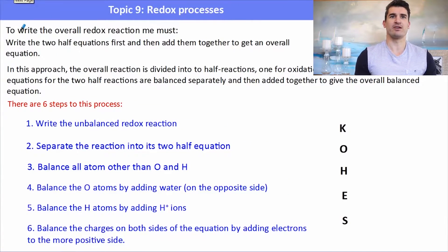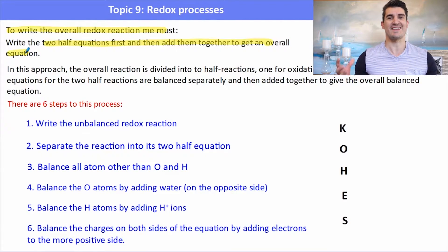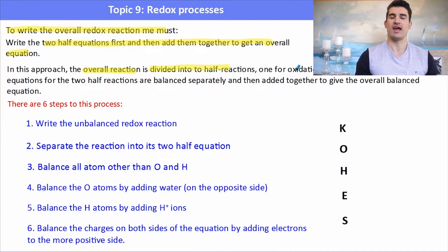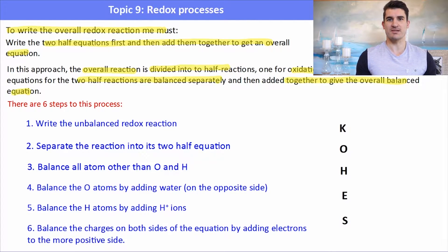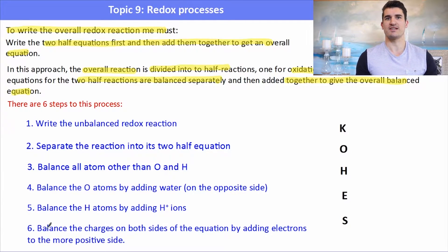So how do we write a redox reaction? To write an overall redox reaction we must first balance the individual half equations and then add them together at the end. We want to write the equation for the oxidation and reduction reactions separately and then add them together to get the overall equation.